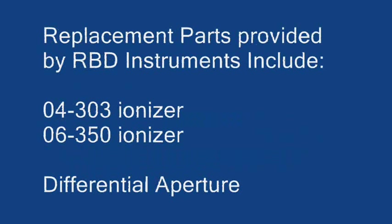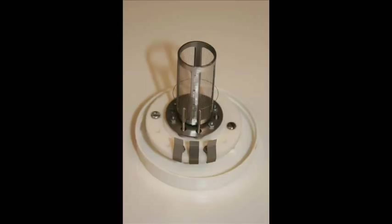We provide these parts as replacements for the 04303 ion source. The ionizer and the differential aperture. We also provide a rebuild service for the 06350 ionizer, which is a very similar ion source as the 04303. Here's a picture of the 04303 ionizer. This is something that's very easy to replace by the user in the field.